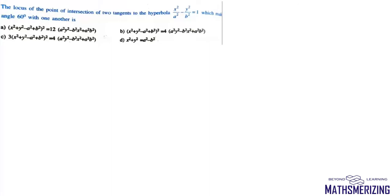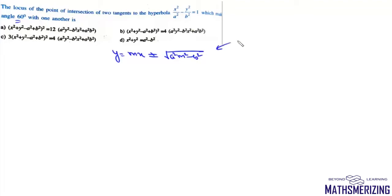The next question asks for the locus of the point of intersection of two tangents to a hyperbola which make an angle of 60° with each other. The equation of a tangent is y = mx ± √(a²m² - b²). Let the point of intersection be (α, β), so we write (mα - β)² = a²m² - b².